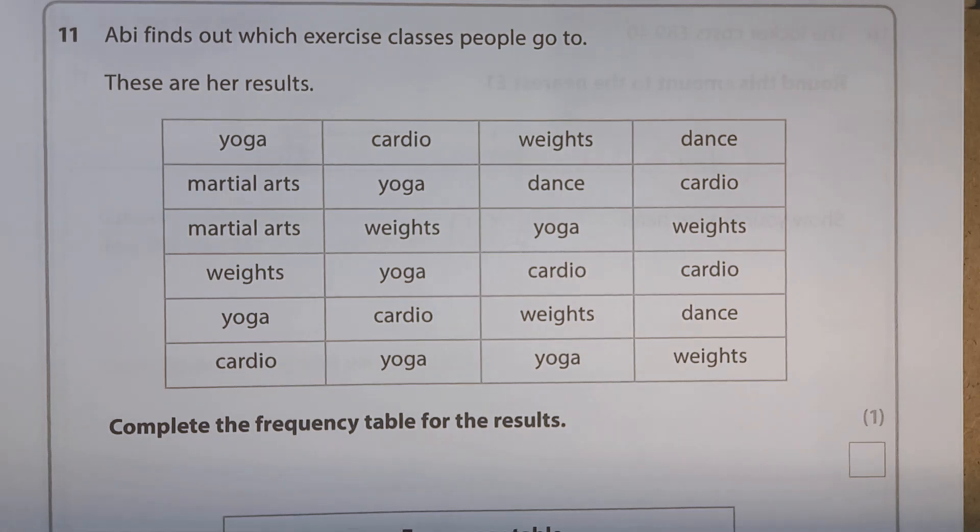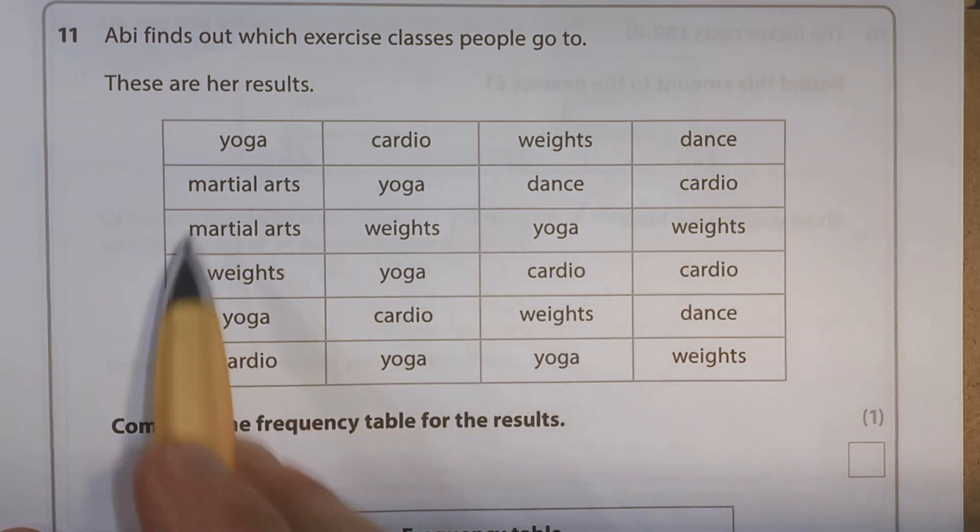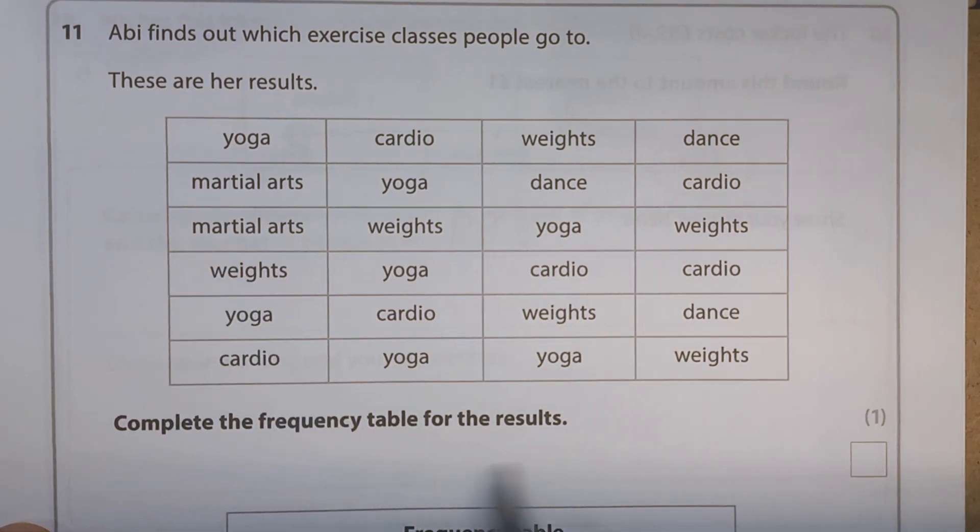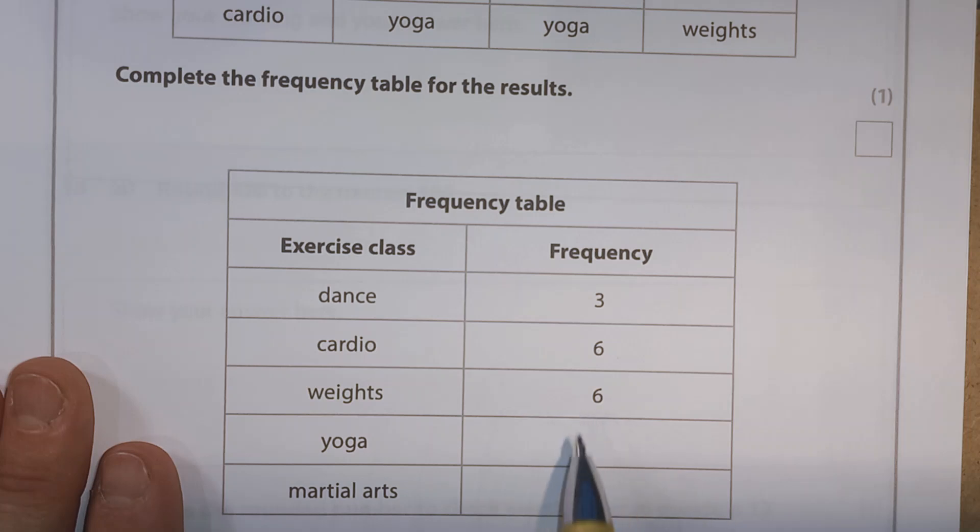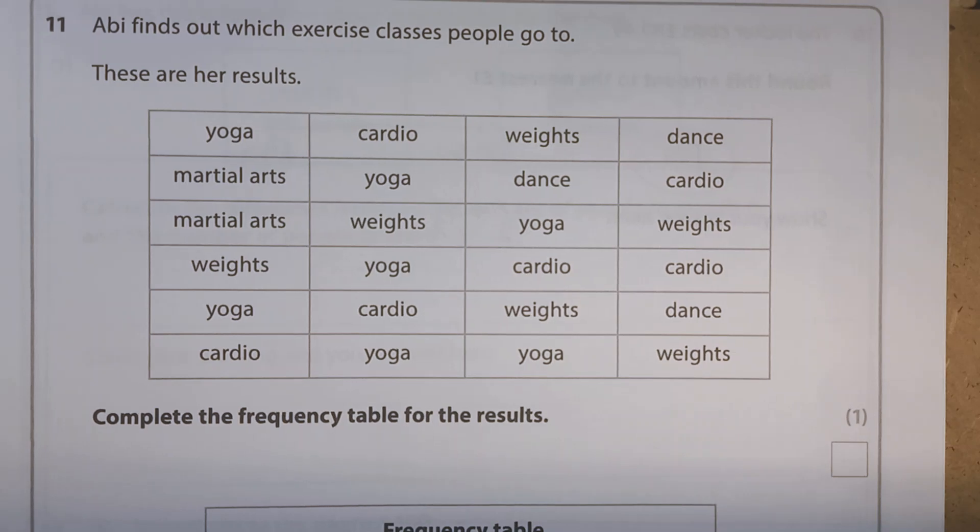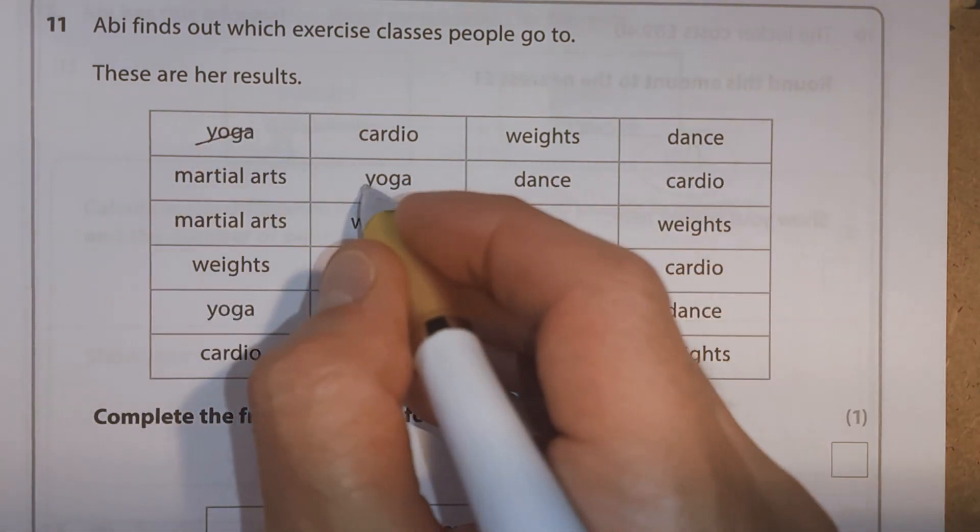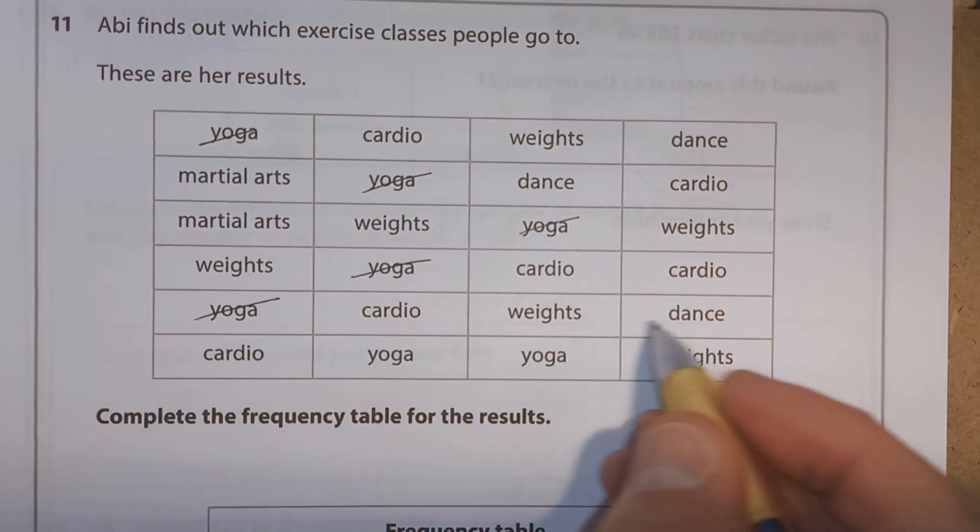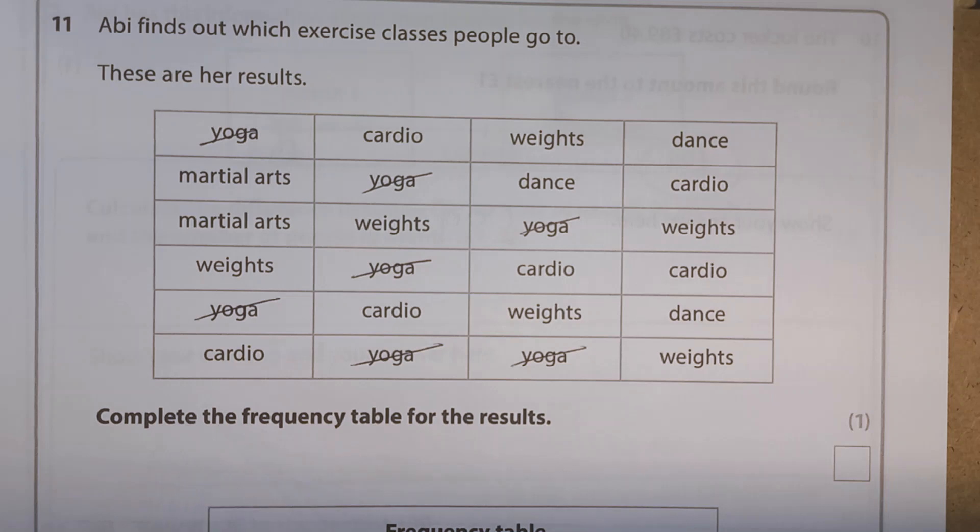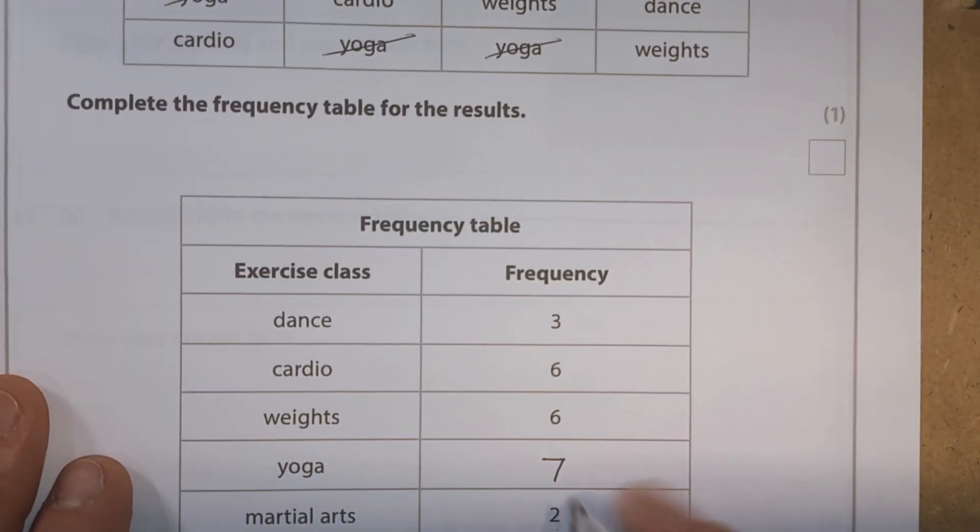Question 11. So we've got one, one, two, three, four, five, six, seven. There you go. That's all we need to do.